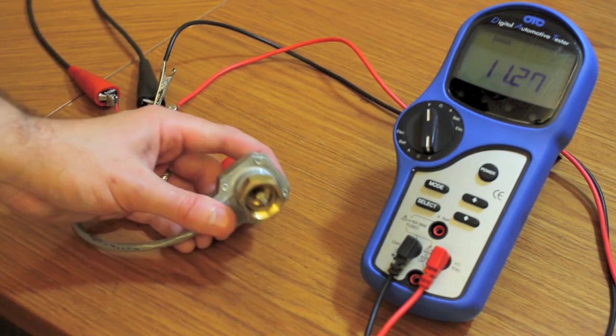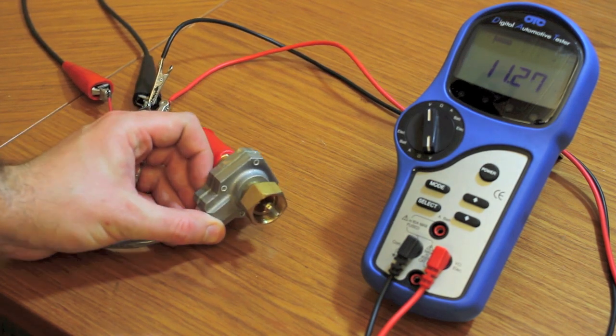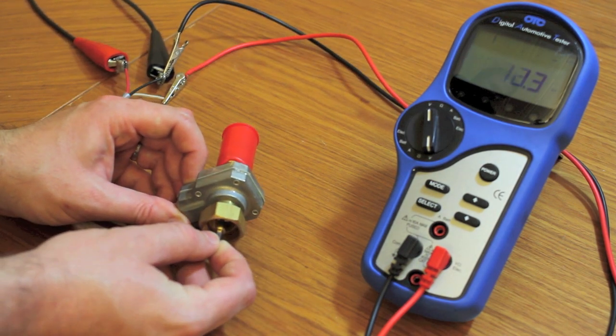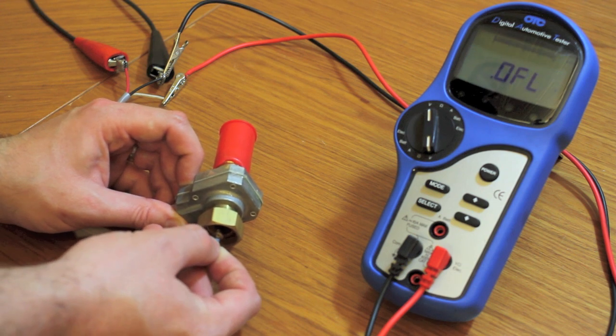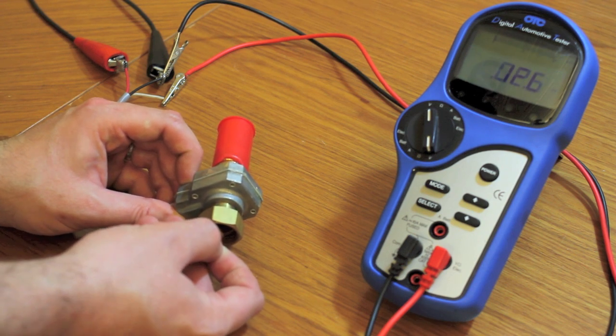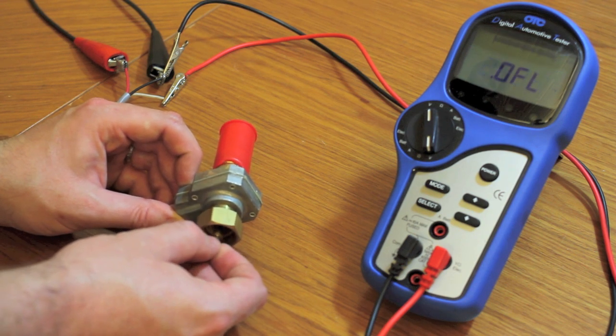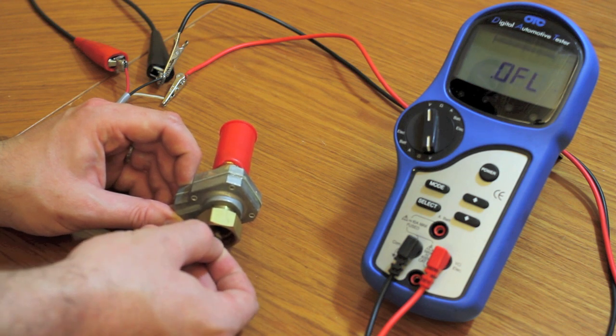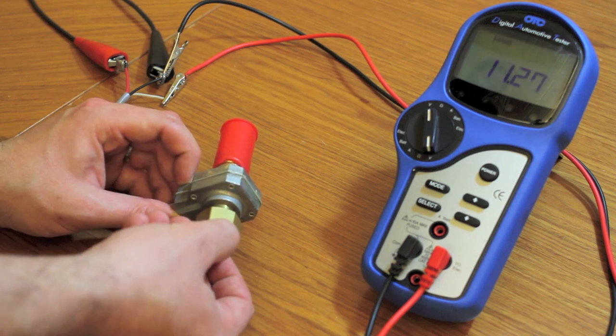And we take the sender and very, very slowly we are going to turn this. As you can see on the meter, we are seeing our source voltage and then an open. Source, open, source, open. And it is that pulse that we are looking for.